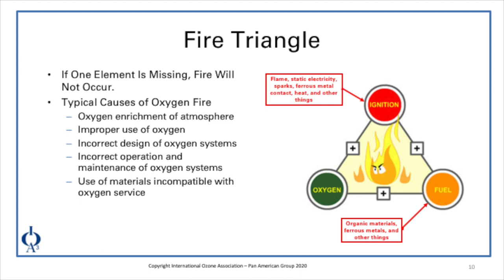Typical causes of oxygen fires include oxygen enrichment of the atmosphere, improper use of oxygen, incorrect design of oxygen systems, incorrect operation and maintenance of oxygen systems, or use of materials incompatible with oxygen service. In the design of oxygen systems, you want to minimize organic material in the vicinity of your oxygen storage tanks. Oftentimes you'll see concrete used near oxygen storage tanks rather than asphalt paving to avoid organic material in the vicinity. You will also see no smoking signs regularly posted around oxygen systems to try to eliminate ignition sources.